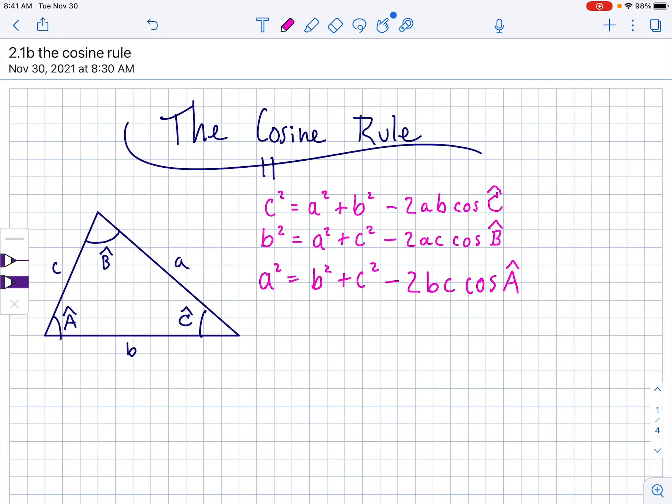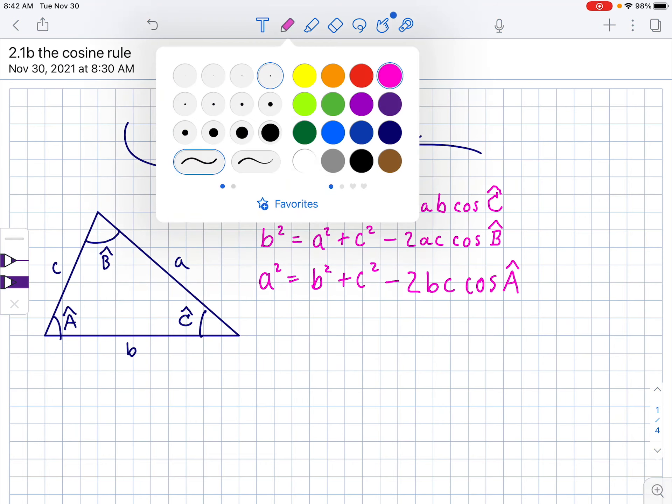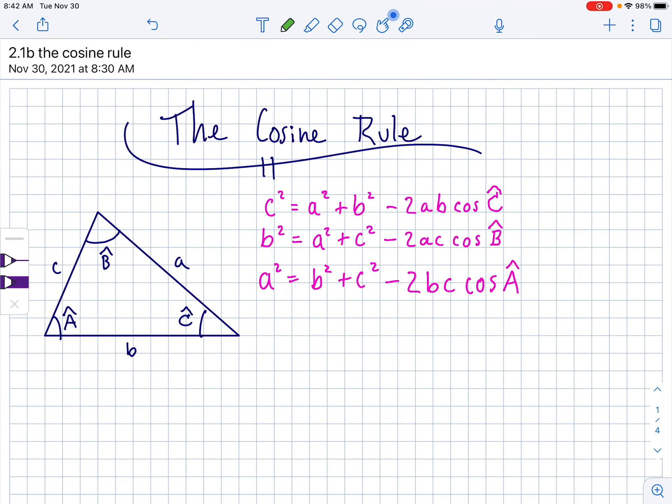There's kind of two situations where the law of cosines is necessary. There's two situations where you would use the law of cosines instead of the law of sines, which by the way, if you can use the law of sines, use it. It's so much simpler. Law of cosines is a lot. It's a lot of algebra and it's easy to make a mistake in your calculator. So if you can go law of sines, use law of sines.